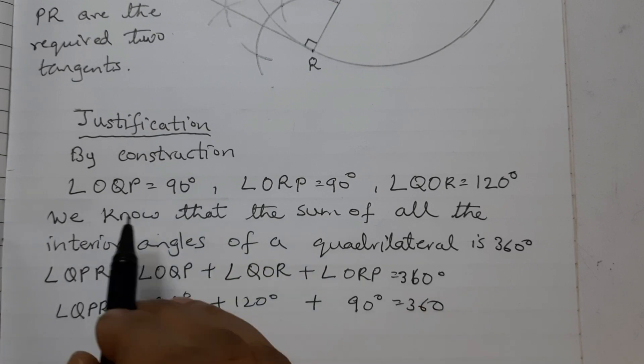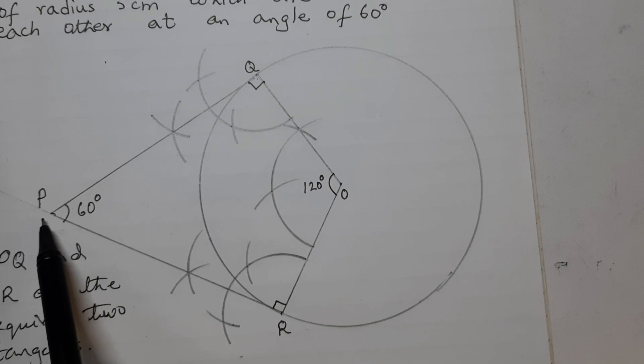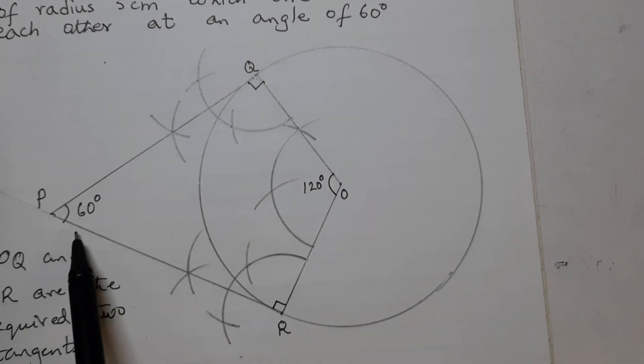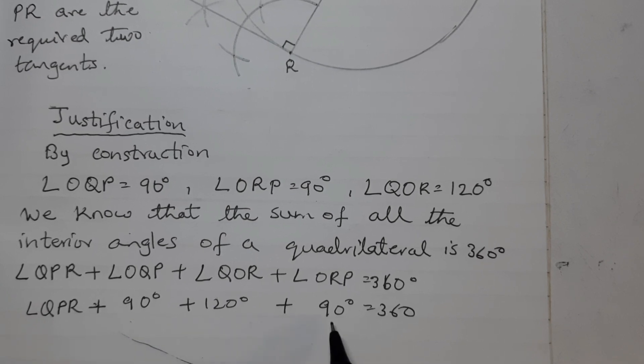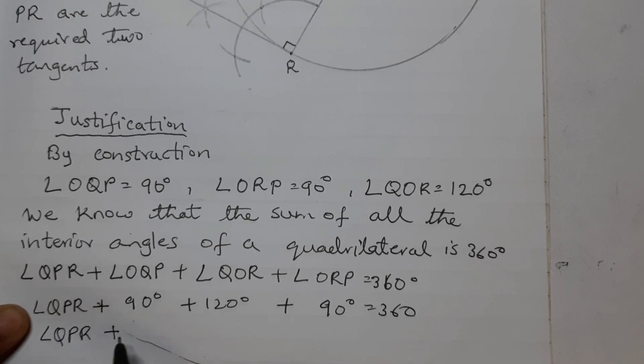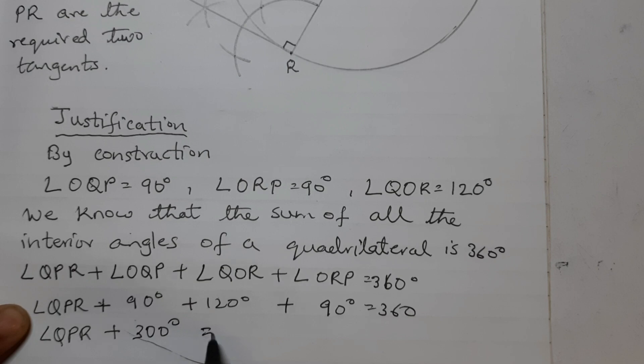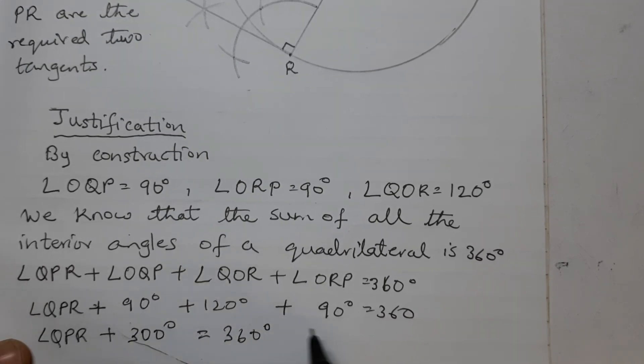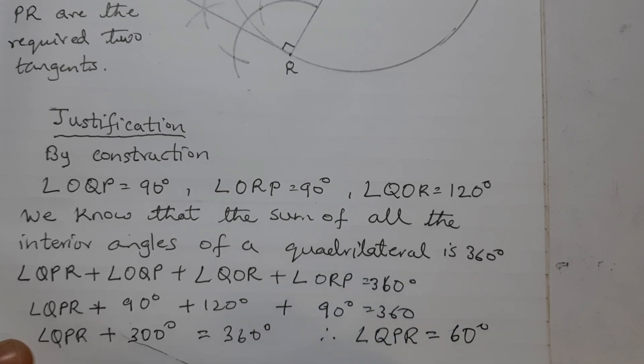So we can write it like this. So angle QPR, that is this angle here, Q, P, R, is 60 degrees. That's what we need to prove. So angle QPR plus 90 degrees plus 120 degrees plus 90 degrees equals to 360 degrees. QPR plus this is a total of 300 degrees is equal to 360 degrees. Therefore, angle QPR is equal to 360 minus 300, which is 60 degrees.